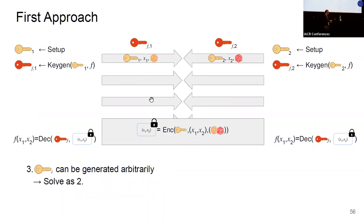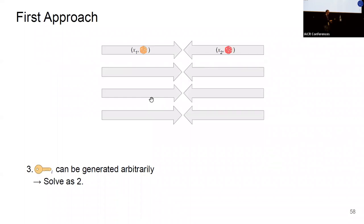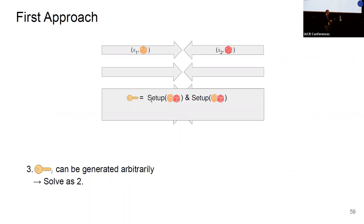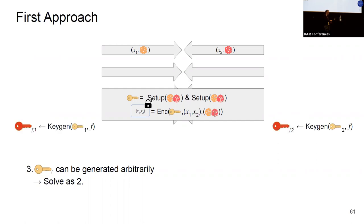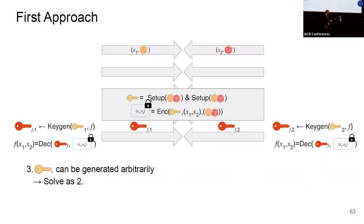One idea to force parties to honestly generate a key is joint randomness computation: parties input randomness and private inputs in round one, and the protocol computes the master secret key and ciphertext for the combiner using combined values. After the MPC executes, both parties obtain their master secret keys, generate functional key shares, exchange them, and compute the functional decryption output. However, this is not round-optimal — it would require a fifth round, since parties must first run the MPC to obtain keys, then exchange functional key shares.